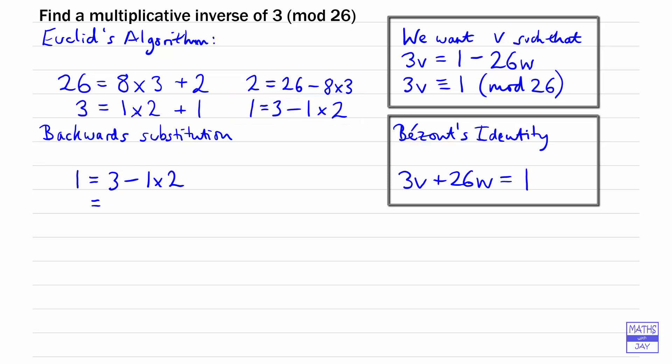Then we can replace the 2 by 26 minus 8 times 3. It's just a matter of multiplying out and tidying up. So we're going to have 3 minus 1 times 26, and then minus 1 times minus 8, so plus 8 times 3.